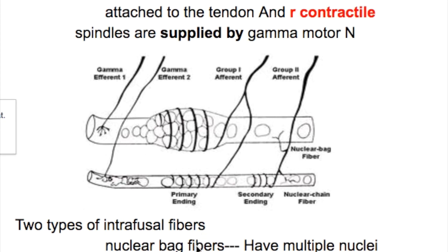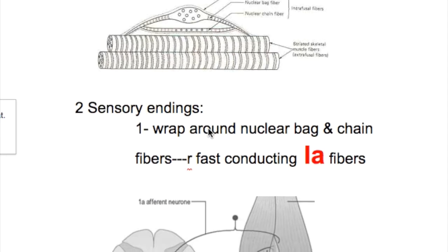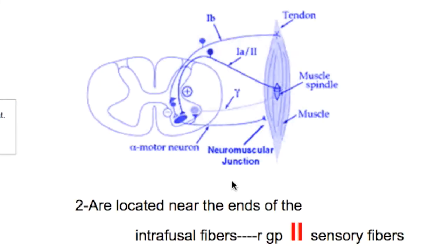There are two types of intrafusal fibers: nuclear bag fibers and nuclear chain fibers. The nuclear bag fibers have multiple nuclei. The nuclear chain fibers are thin, short, and their ends are attached to the nuclear bag fibers. Two sensory endings wrap around the nuclear bag and chain fibers — they are fast-conducting 1a fibers. When the spindle is stimulated, an action potential is generated and the 1a fiber takes the impulse directly to the alpha motor neuron to cause muscle contraction.